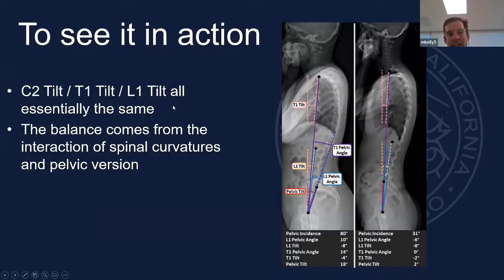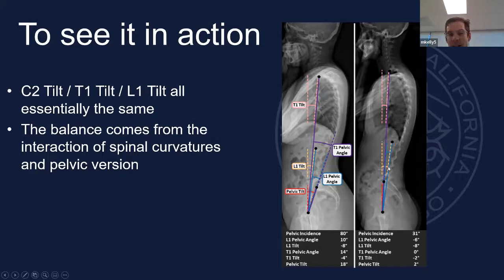C2 tilt, T1 tilt, and L1 tilt are all essentially the same in people who stand normally. The balance comes from the interaction of spinal curvatures and pelvic version. A patient with a pelvic incidence of 80 stands with a T1 tilt of negative 4 and L1 tilt of negative 8. A patient with a pelvic incidence of 30 stands with a T1 tilt of negative 2 and L1 tilt of negative 8 — identical L1 tilts, totally different lumbopelvic and thoracic anatomy.